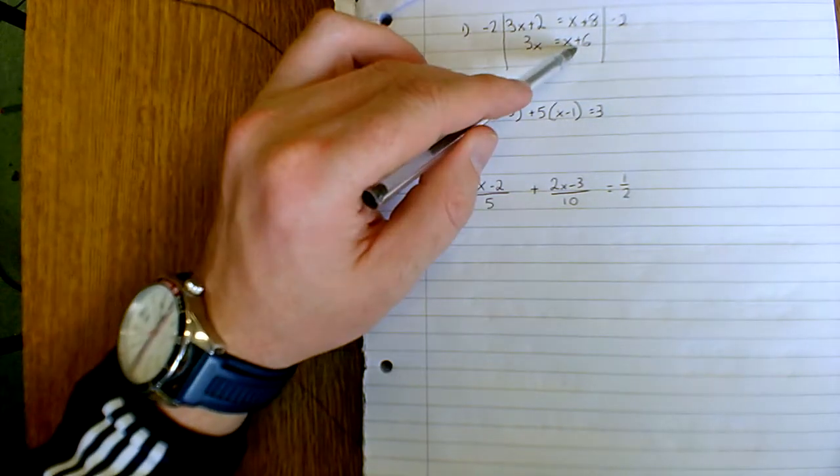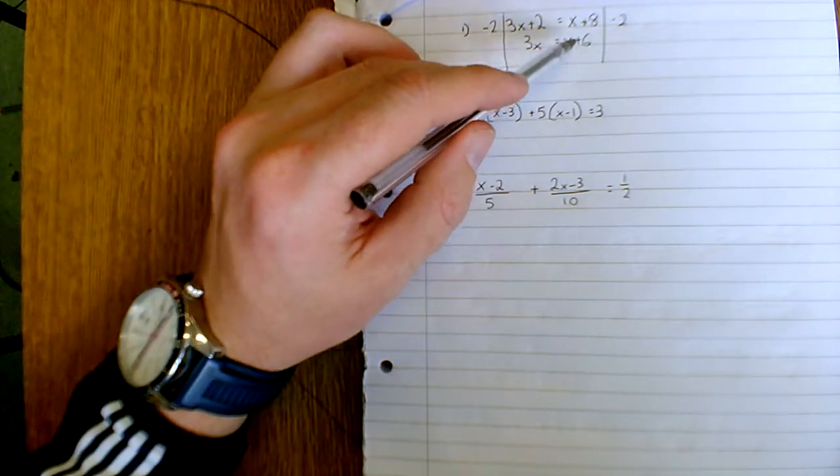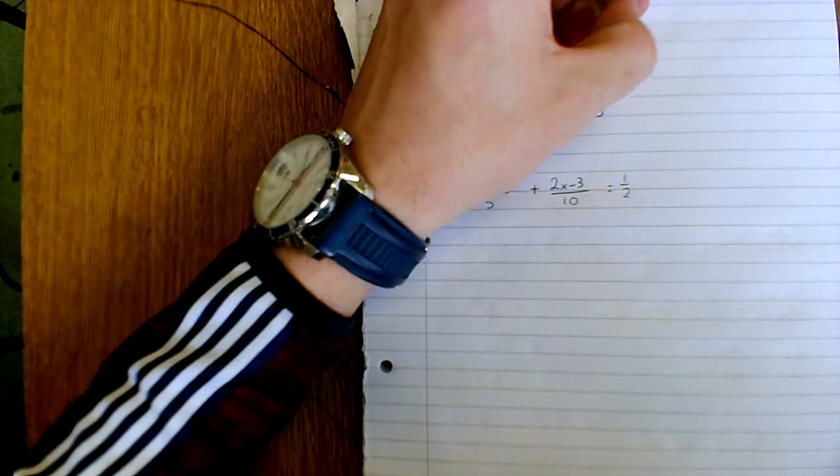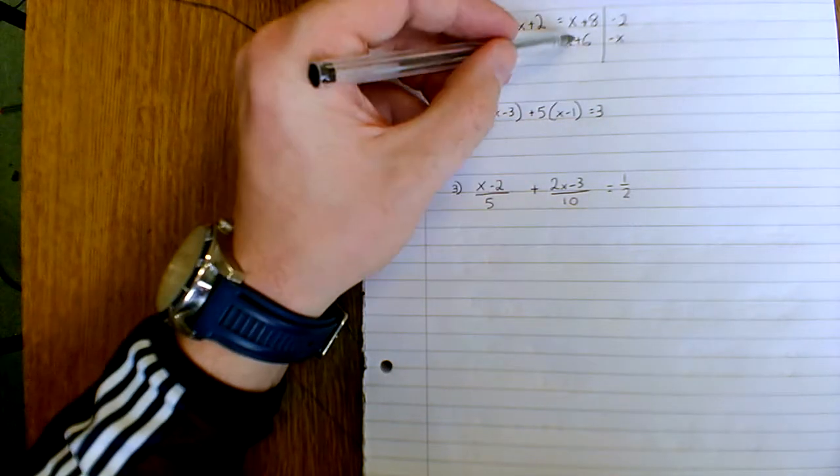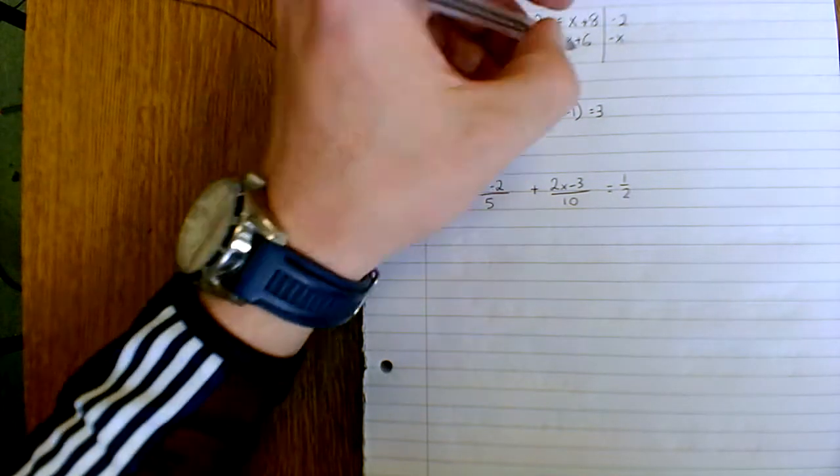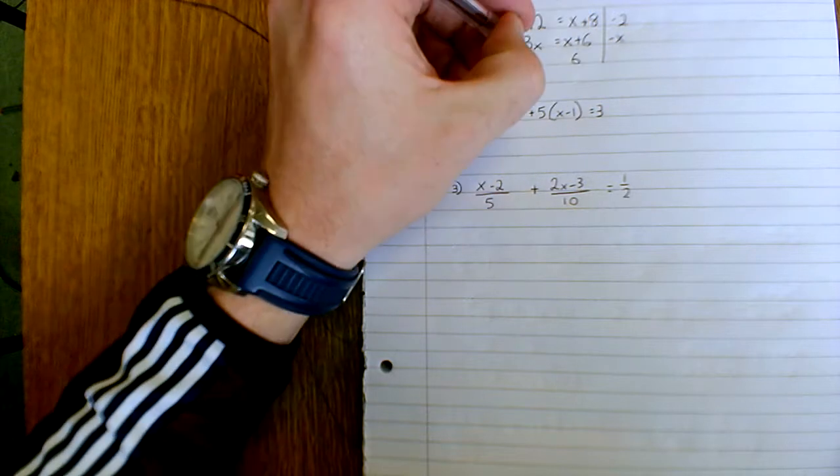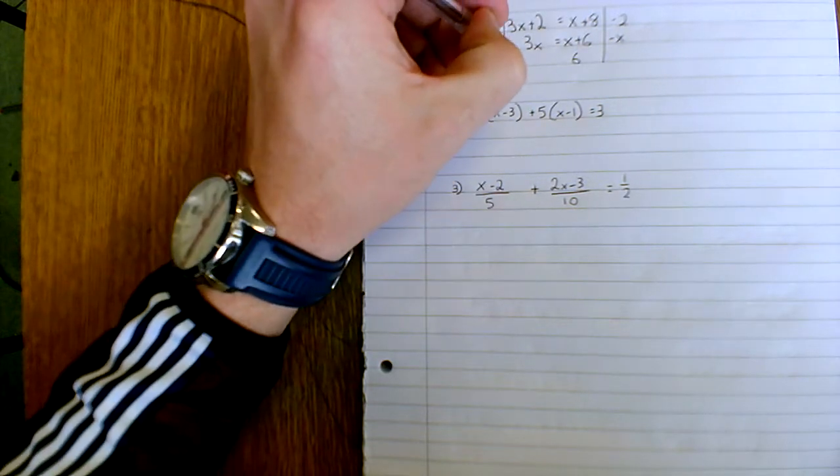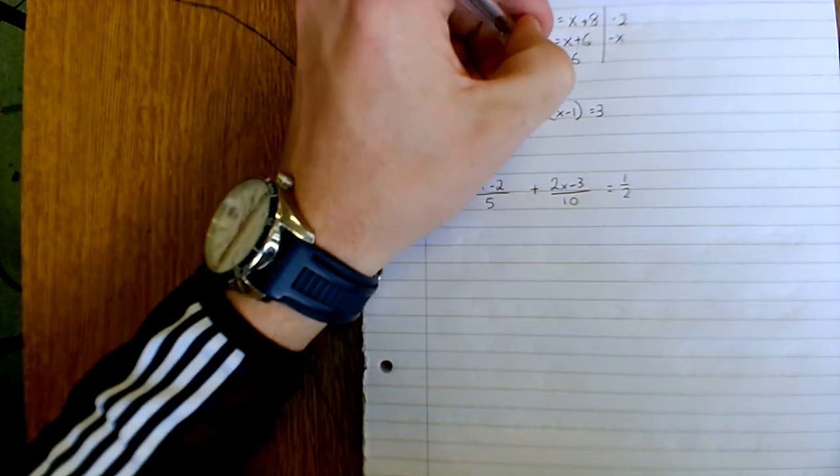Likewise, I want to just have numbers on this side, so I'm going to get rid of the x. I'm going to minus an x because it's a plus x. So x plus 6 minus x is just 6. If I do it to this side, I have to do it to the other. So 3x minus x is 2x, and 2x is 6.